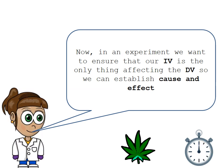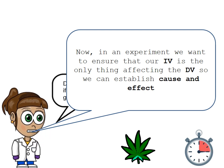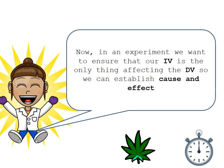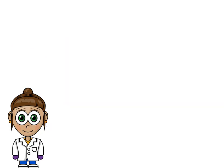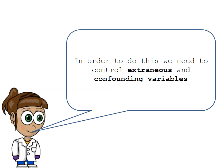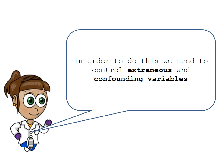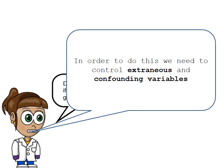For example, thinking back to the experiment on marijuana and reaction time, we want to be sure that the only thing that affected the reaction time was whether or not the participants had marijuana. In order to establish cause and effect, we need to control something called extraneous and confounding variables.